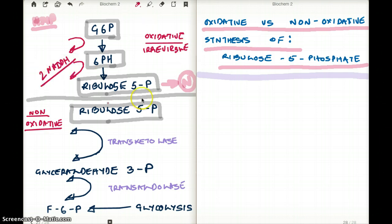This irreversible oxidative process—sometimes in some cells in our body, we cannot use this process to make ribulose 5-phosphate. Not all cells can go through the HMP shunt to make ribulose 5-phosphate. So how do we make ribulose 5-phosphate in cells where we cannot make it through the HMP shunt?